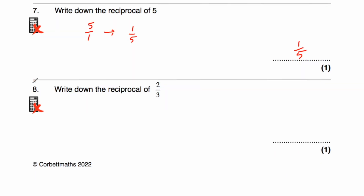Question 8: find the reciprocal of 2 thirds. Flipping it over gives us 3 halves. We could write 3 halves as our answer. Alternatively, we could write it as 1.5, because 3 divided by 2 is 1.5. Or we could change it into a mixed number: 2 into 3 goes once remainder 1, so 1 and a half. So the answer can be written as 3 halves, 1.5, or 1 and a half.